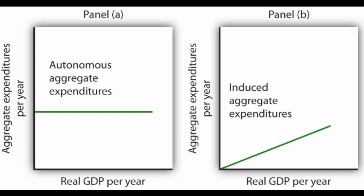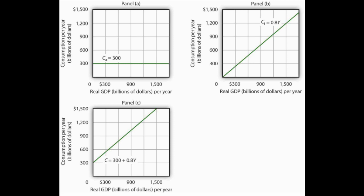The second part of the consumption function after the constant represents what we call induced consumption. This is the expected increase in consumption from households as the economy grows and theoretically households make more money. This is part of why economic growth can be problematic — we consume more, and not always the best things. The induced consumption part of the consumption function is why the AE curve is upward sloping, reflecting a positive relationship between expenditures and the economy.